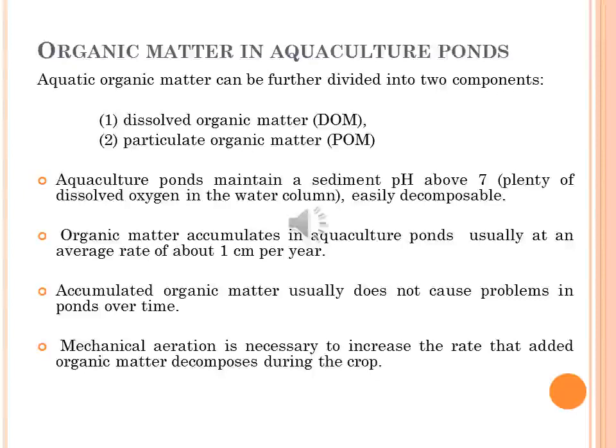Organic matter can be further divided into two components. Dissolved organic matter is measured as color or dissolved organic carbon. Particulate organic matter is differentiated by whether it can pass through a 0.45 micrometer filter — dissolved organic matter can pass through, while particulate organic matter cannot. Aquaculture ponds are managed to maintain a sediment pH above 7, with plenty of dissolved oxygen in the water column, and organic matter entering ponds tends to be easily decomposable. Around 90% of organic matter entering a pond during a crop cycle normally is decomposed by the end of that cycle.